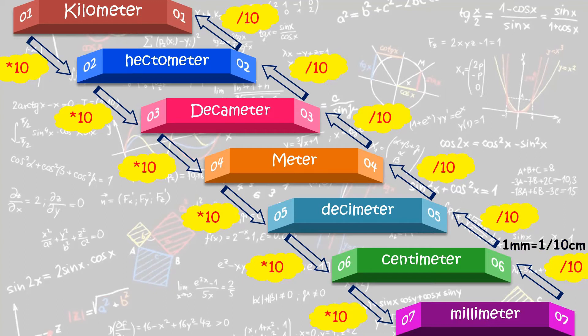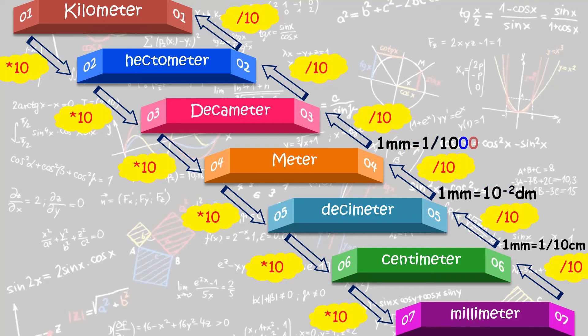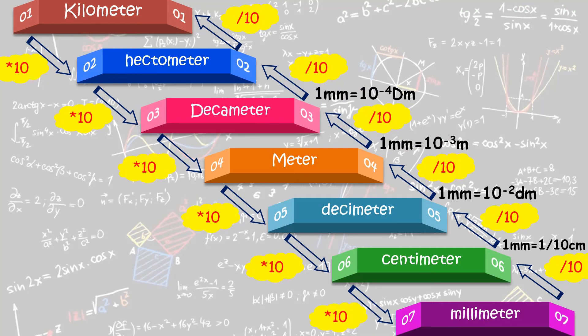One millimeter is equal to 1/10 centimeter, that is 0.1 centimeter. Next, one mm is equal to 10 raised to minus 2 decimeters. One mm is equal to 10 raised to minus 3 meters. Then one mm is equal to 10 raised to minus 4 decameters.